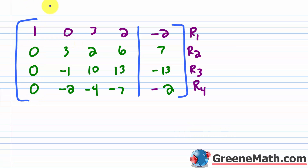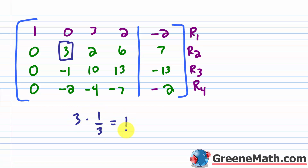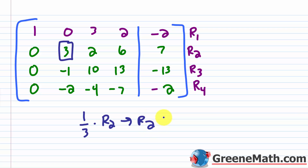Now I move to the next column and get a 1 in the second pivot position — I already have a 0 above it. I'll multiply row 2 by one-third (the reciprocal of 3) to get the leading 1. So row 2 becomes: 1, two-thirds, 2, seven-thirds.